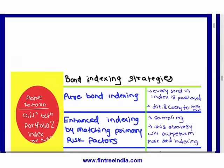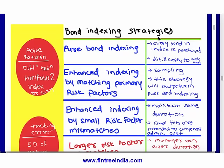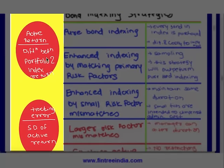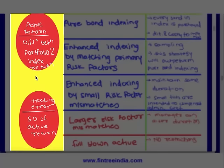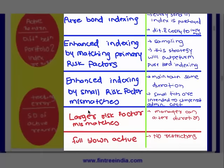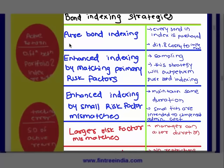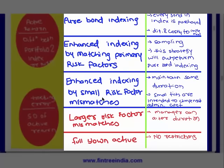The next learning outcome was bond indexing strategy. Two key terms: active return is the difference between portfolio and index return, and tracking error is the standard deviation of active return. The CFA curriculum end-of-chapter questions require you to calculate tracking error by computing the difference between portfolio and index returns, then calculating the standard deviation of that value.